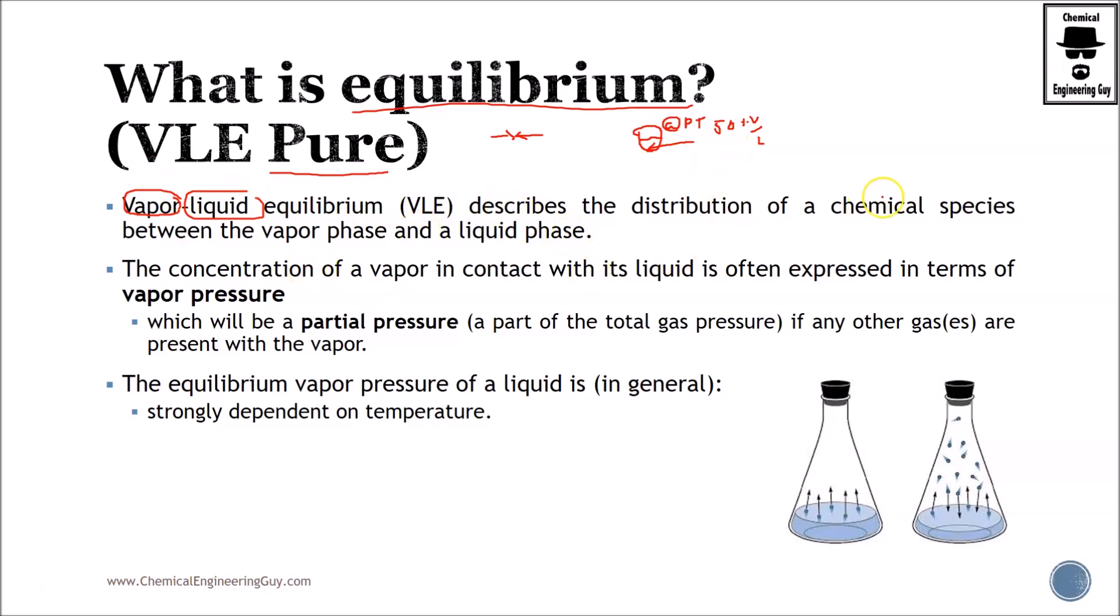So let's get more technical. VLE describes the distribution of a chemical species between the vapor phase and the liquid phase. The concentration of a vapor in contact with its liquid is often expressed in terms of vapor pressure. So instead of saying percentages or conditions, we just state the vapor pressure exerted, which will be a part of the partial pressure if we have a mixture.